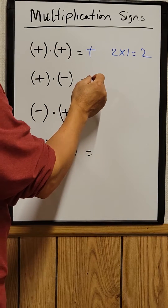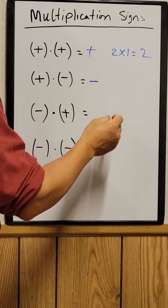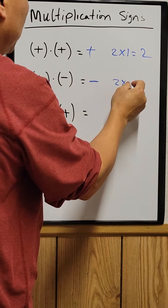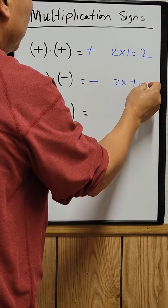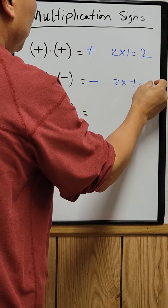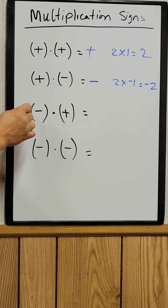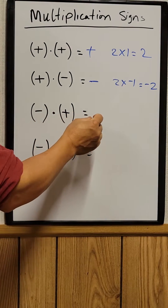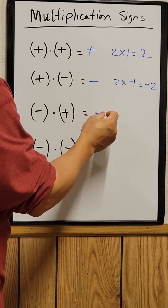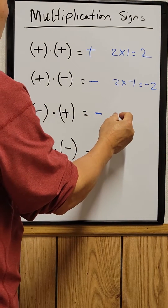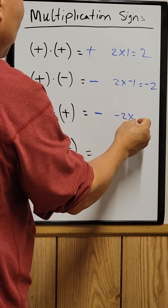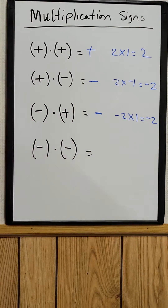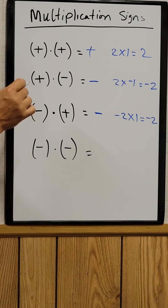If you take a positive times a negative, the answer is always negative. So 2 times negative 1 is always negative 2. If you take a negative times a positive, the answer is always negative. For example, negative 2 times 1 equals negative 2.